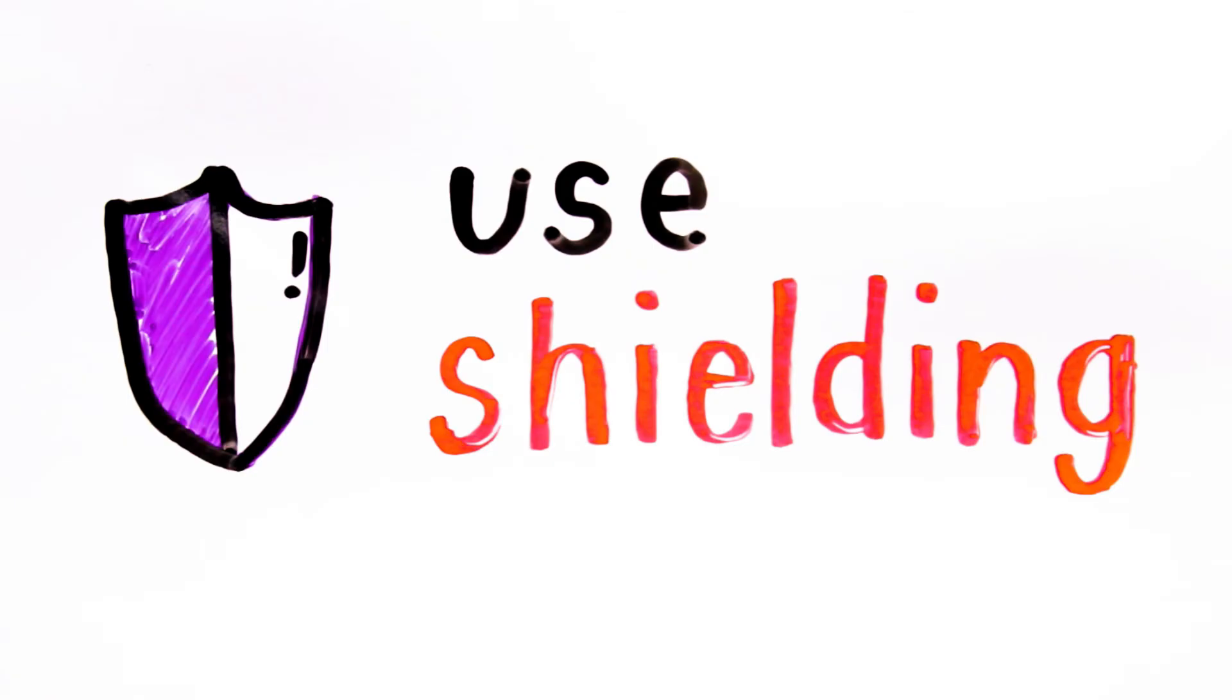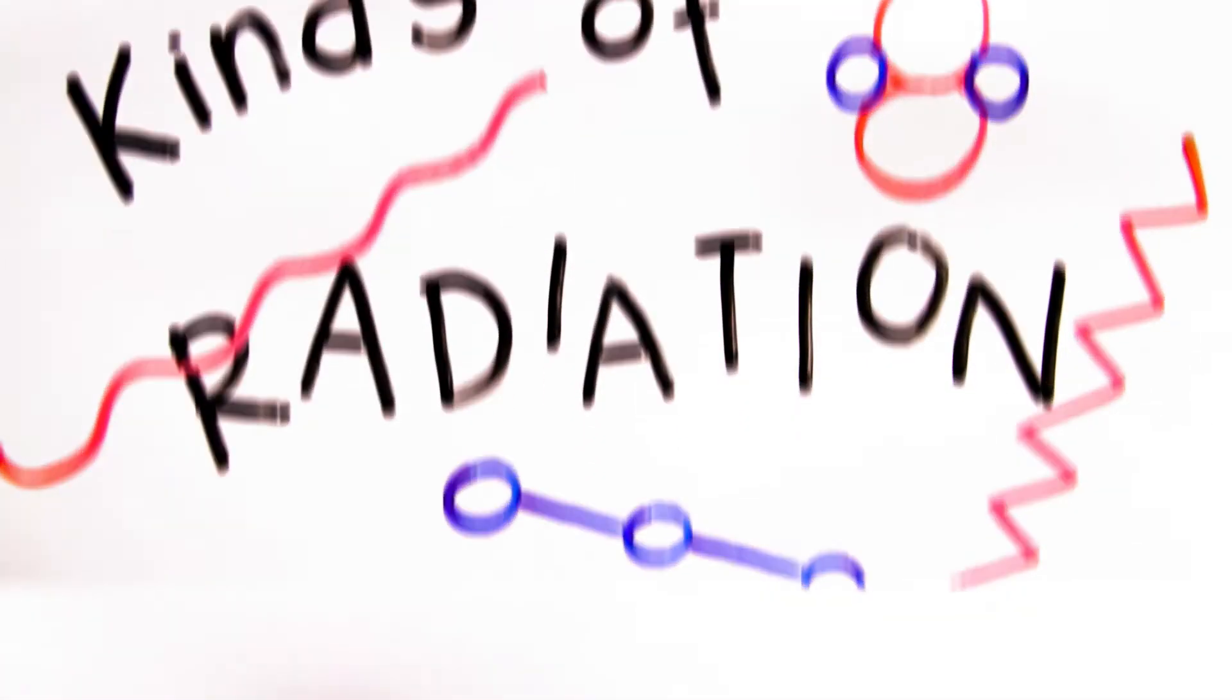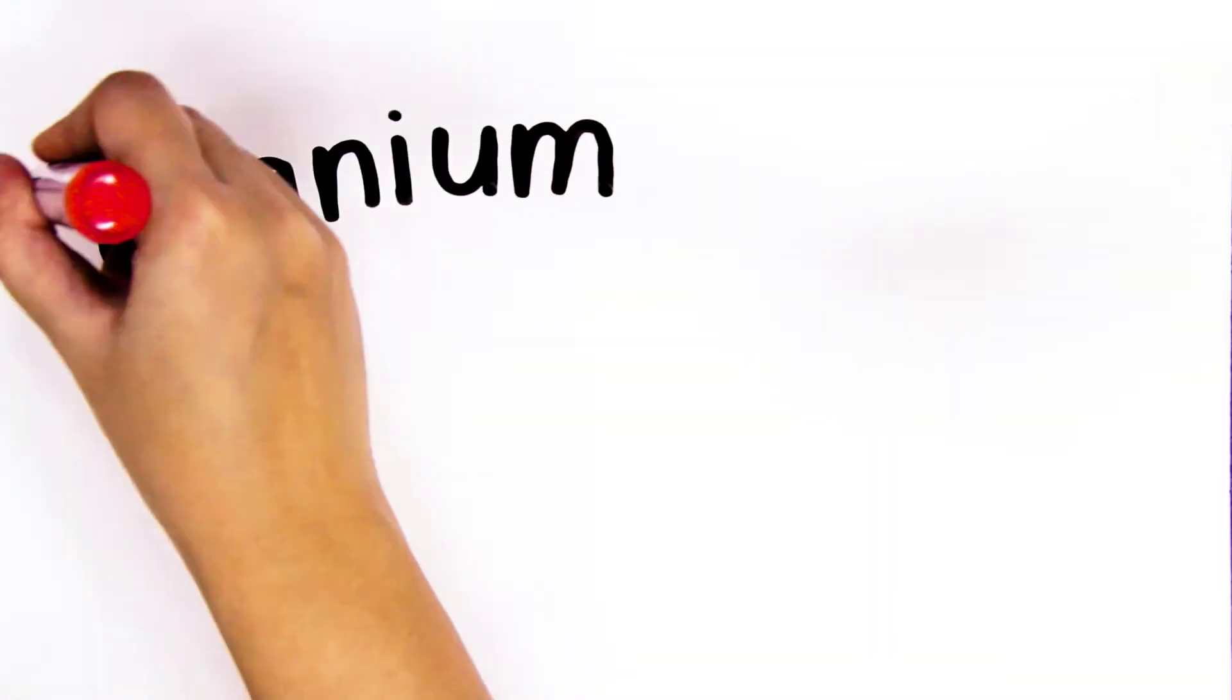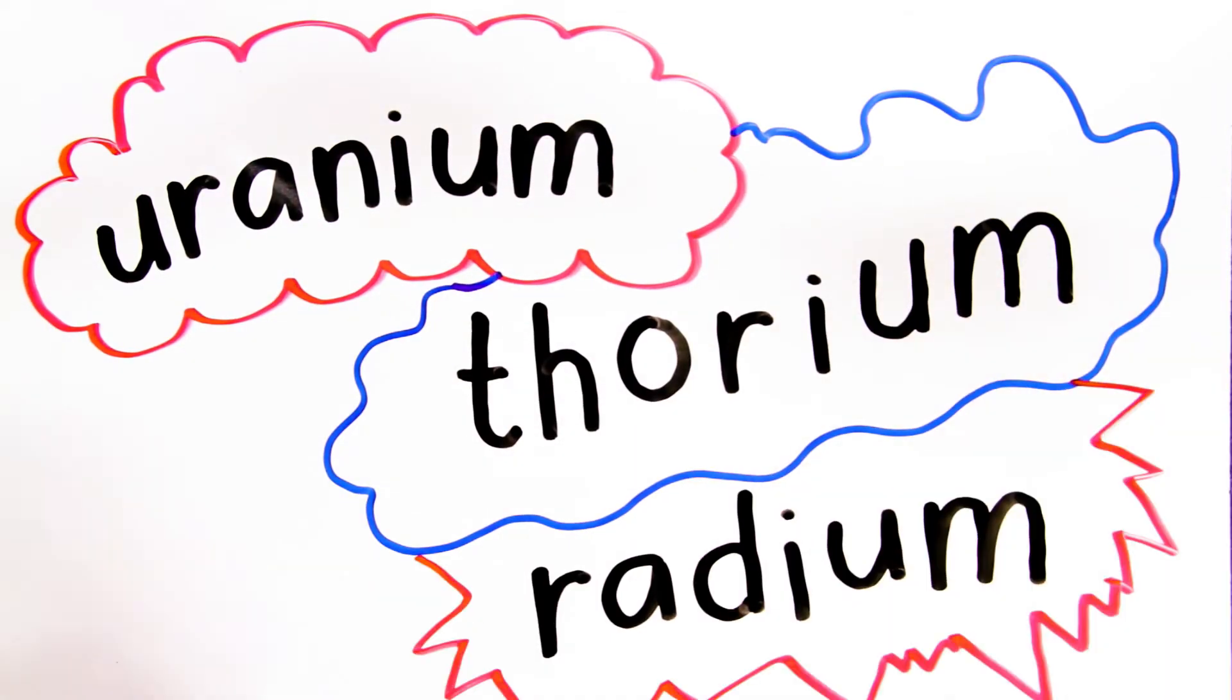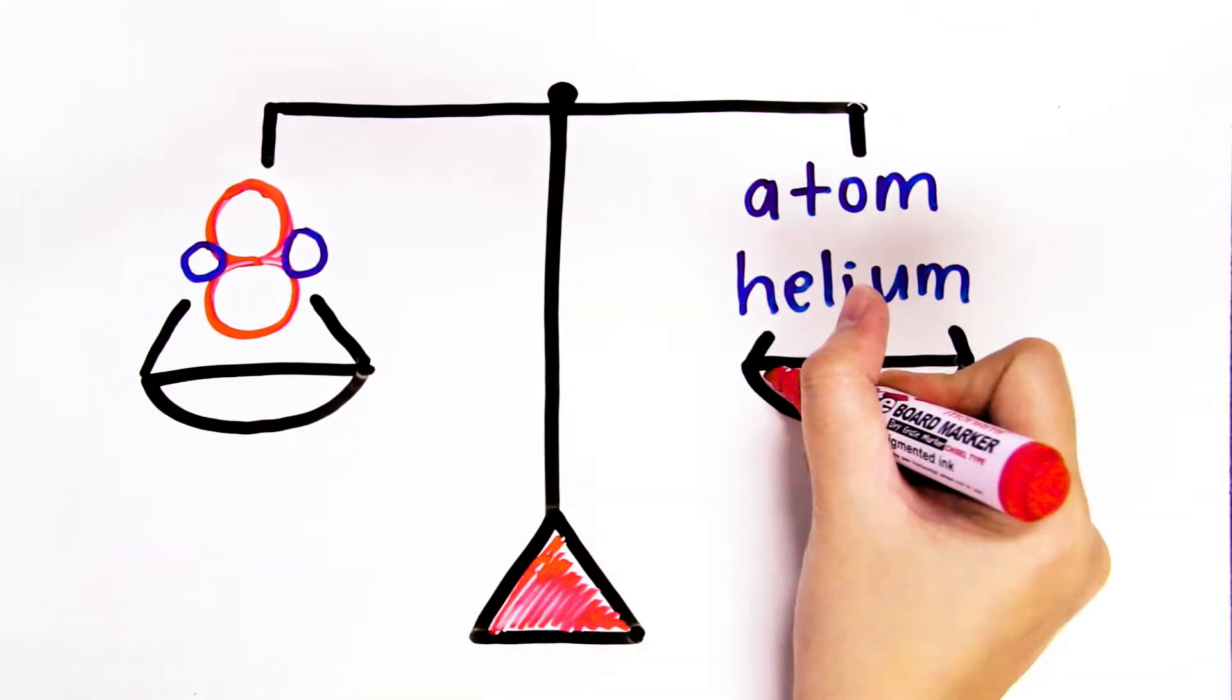And finally, we go to shielding. Different kinds of radiation require different kinds of shielding. Alpha radiation, which comes from uranium, thorium, and radium, has the same mass as a helium atom, with 2 protons and 2 neutrons.